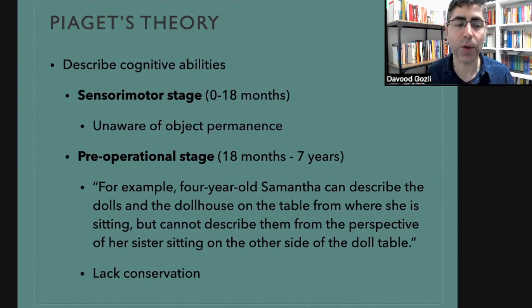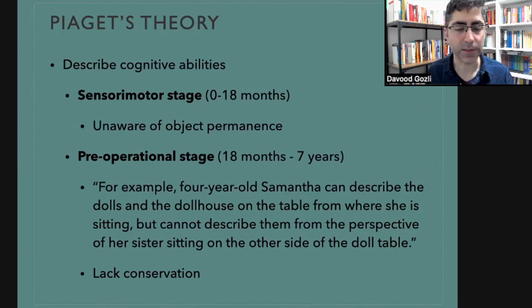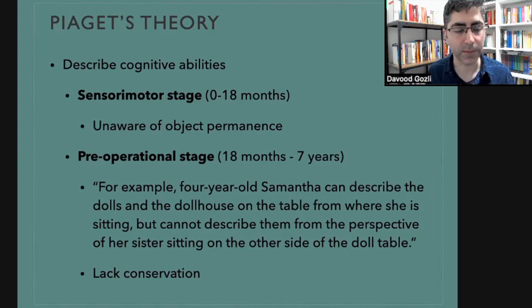That is what is referred to as object permanence. It emerges in the so-called pre-operational stage. A passage from the textbook: 'For example, four-year-old Samantha, in the pre-operational stage, can describe the dolls and dollhouse from where she is sitting, but cannot describe them from the perspective of her sister sitting on the other side of the table.' So perspective-taking is missing in the pre-operational stage.